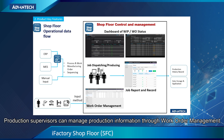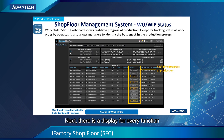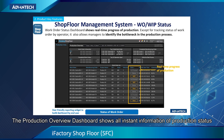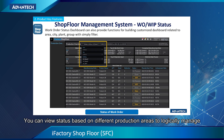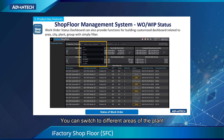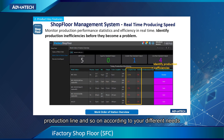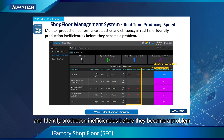Production supervisors can manage production information through work order management. The production overview dashboard shows all instant information of production status to let supervisors see if there are any bottlenecks or hold-ups. You can view status based on different production areas to logically manage. You can switch to different areas of the plant, production line, and so on according to your needs. Monitor production performance statistics and efficiency in real time, and identify production inefficiencies before they become a problem.